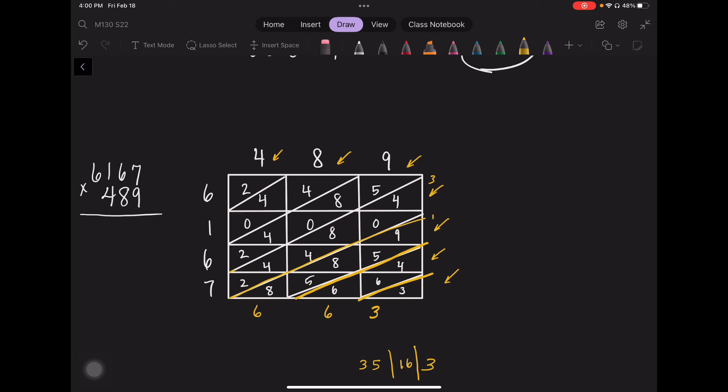The next diagonal over is 2 plus 4 plus 4 plus 8 plus 4 plus that extra 3. That gives me 25. Carry the 2. Then I have 2 plus 4 plus 4 plus 4 plus 8 plus 8 plus 5 plus the 2 I carried over. That gives me 21. Carry the 2.